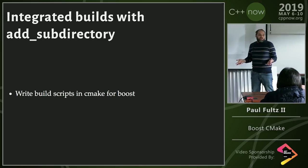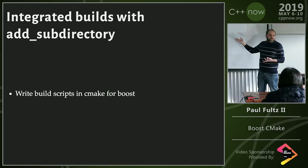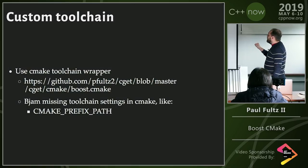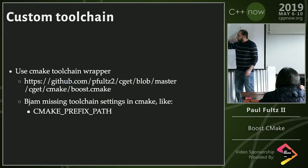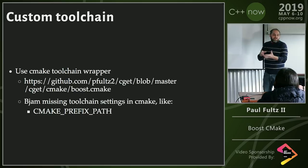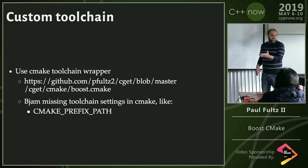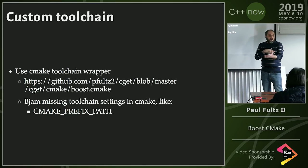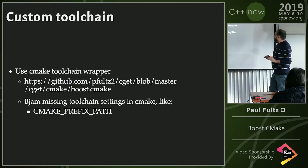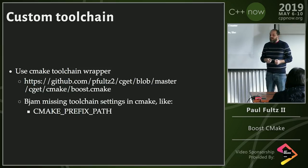For integrated builds with add_subdirectory, there aren't really many options currently — users have to write their own CMake build scripts for what they need. For custom toolchains, there is a boost.cmake file you can download, rename to CMakeLists.txt, and put at the top level of Boost. It will actually build Boost using CMake, but underneath the hood it calls Bjam/Boost.Build. It translates some CMake settings to Bjam user config.jam files, but has limitations since not all CMake settings are provided by Bjam.